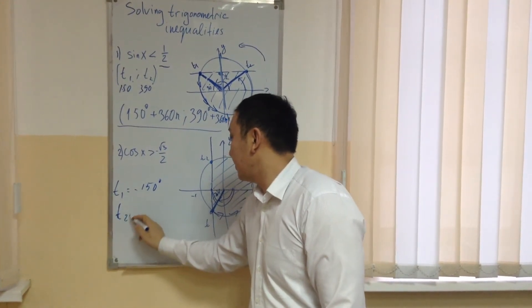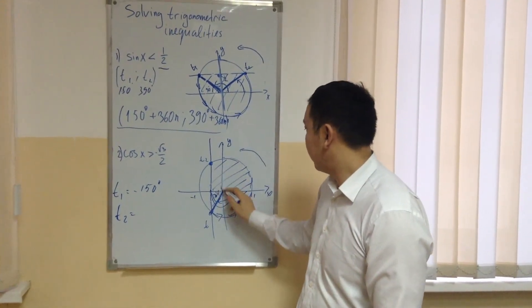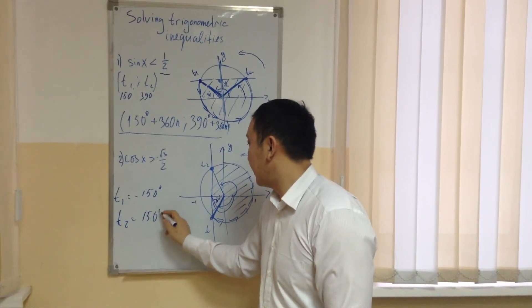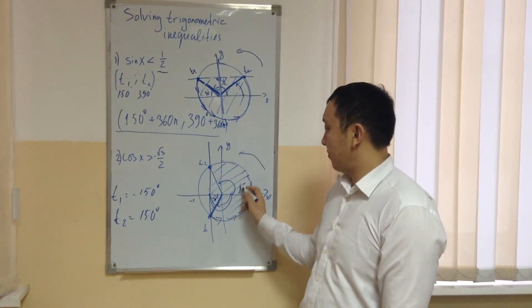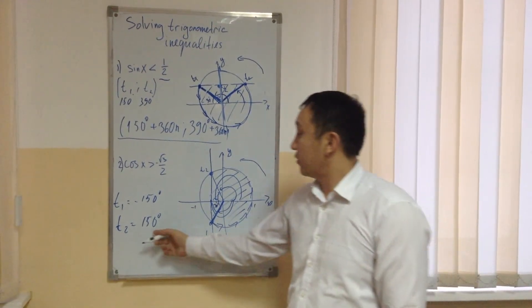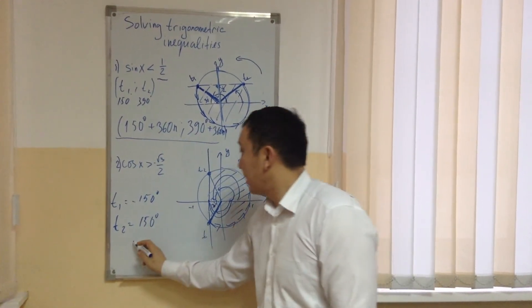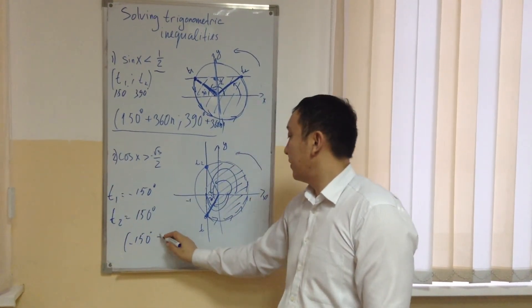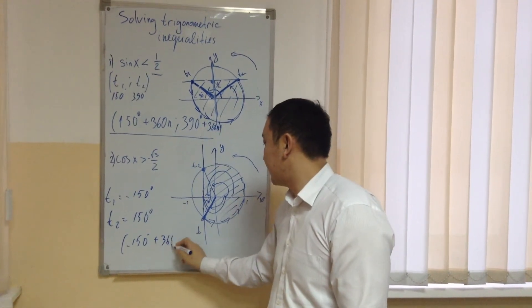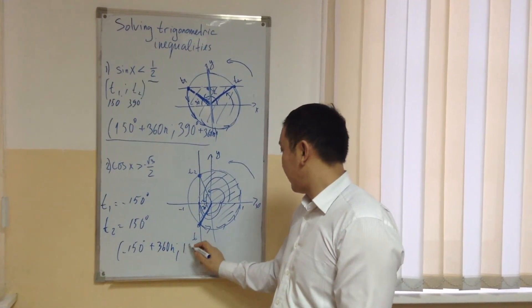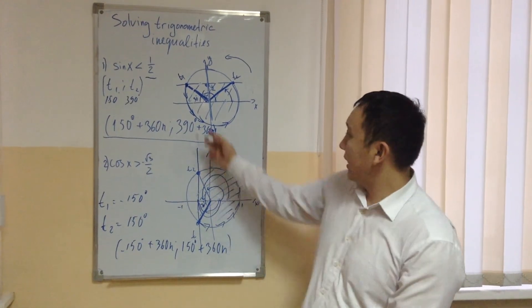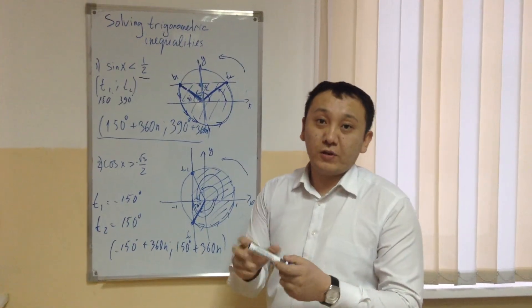And my second point, t2, is this one. So this angle is positive 150 degrees. Because again, the same, 180 degrees and back 30 degrees, so all together 150 degrees. And the answer is from minus 150 degrees plus the period of cosine, the same as sine, 360n till 150 degrees plus 360n, where n is positive whole numbers. Thank you for your attention.